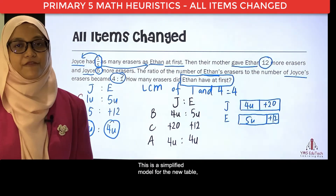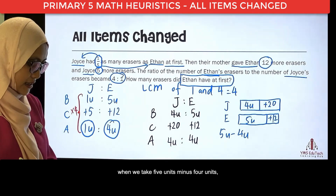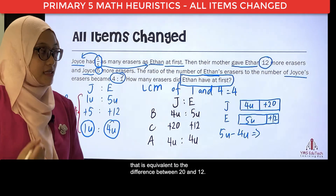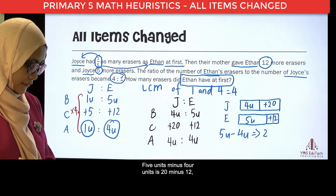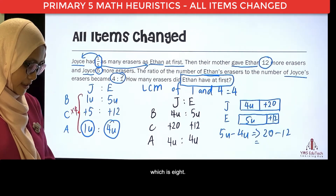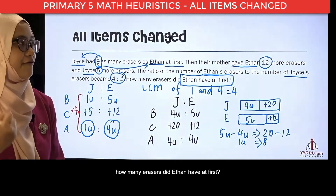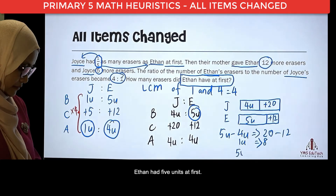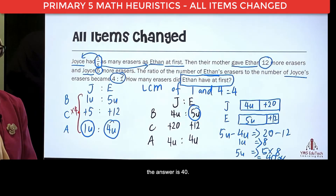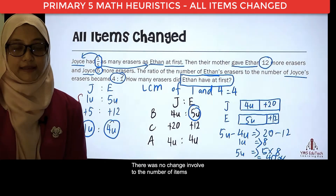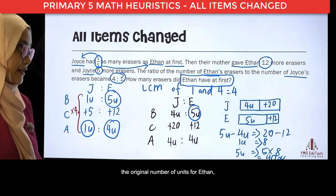So, this is the simplified model for the new table. Now, we can easily see that when we take 5 units minus 4 units, that is equivalent to the difference between 20 and 12. So, 5 units minus 4 units is 20 minus 12, which is 8. So, 1 unit is 8 erasers. The question wants to know how many erasers did Ethan have at first. Ethan had 5 units at first, so 5 multiplied by 8 — the answer is 40. Just ensure that we use the original number of units for Ethan, which was 5 units.